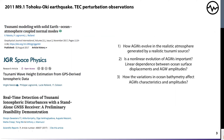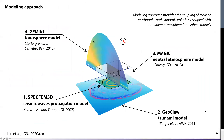In today's presentation I will cover the dynamics of acoustic gravity waves in the neutral atmosphere based on case and parametric studies. To do so, I use the following set of numerical models. First, I run forward seismic wave propagation simulations with the SpecFEM3D model by Komaciti and Trump. Simulated surface displacements are used time-dependently as a source for the tsunami model GeoClaw by Berger. GeoClaw is coupled with our neutral atmosphere model MAGIC by Snively to simulate generation, propagation, and dissipation of acoustic and gravity waves in 3D from the ground to roughly 500 kilometers.